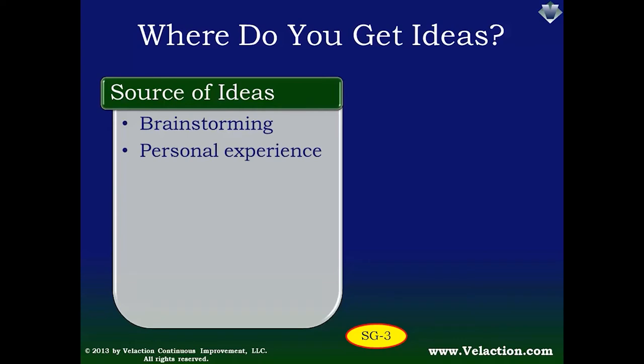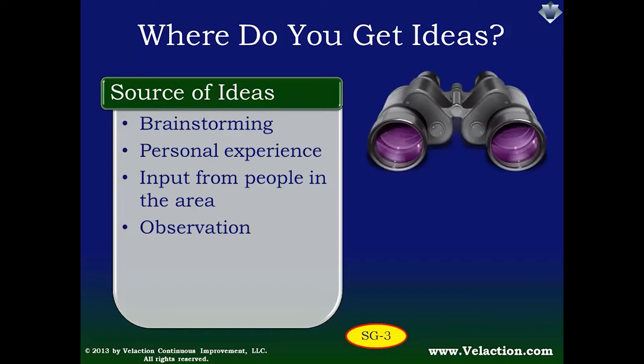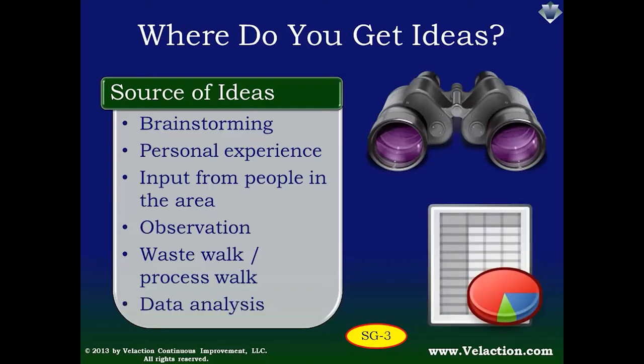Of course, brainstorming ideas don't simply come out of thin air. Personal experience plays a big role in the quality of the ideas that you'll generate. A well-rounded, cross-functional team tends to provide the most comprehensive Fishbone Diagrams. The people working in the area that you're looking at will also have a wealth of ideas. Talk to them about the issues that they're facing. And while you are talking to them, keep your eyes open. There are few things that provide better information than first-hand observation. If you are doing your Fishbone Diagram as part of a Kaizen event, you will probably take part in a very focused look at the process that you will be improving. This observation exercise is known as a waste walk or as a process walk. And of course, no problem-solving effort would be complete without a very close look at your data. This analysis will likely give you several issues to add to your Fishbone Diagram.